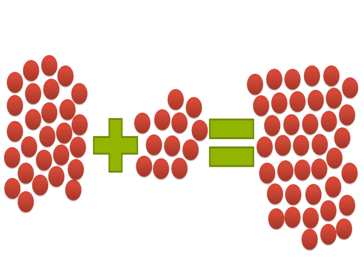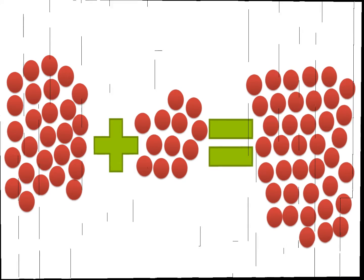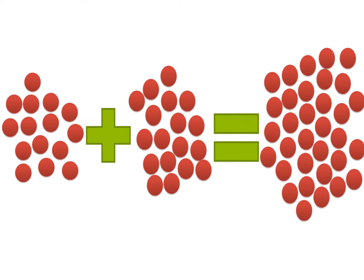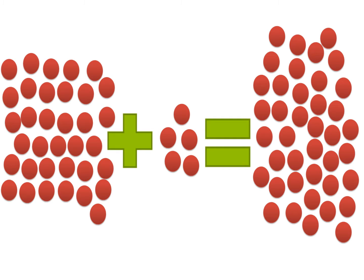27 plus 12 equals 39. 15 plus 18 equals 33. 35 plus 5 equals 40.